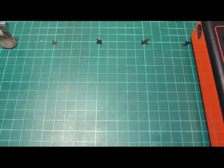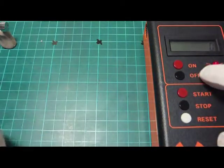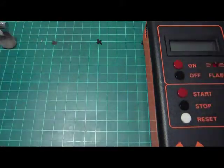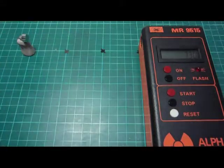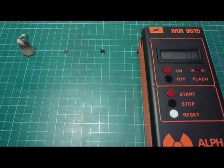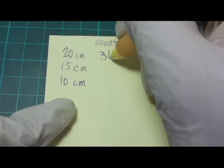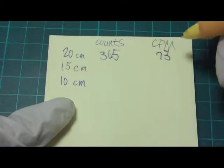Then let's change the distance to 15 centimeters and do it again. Okay, time is up. Now we get 760 counts, and then we push it to another distance, 10 centimeters. 365 counts in 5 minutes is equal to 73 counts per minute.